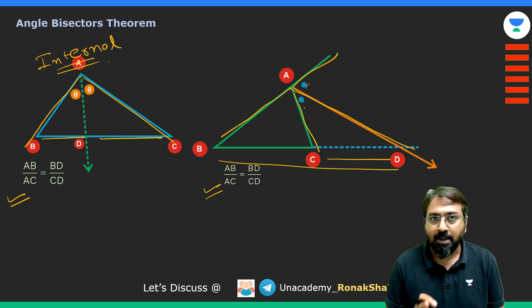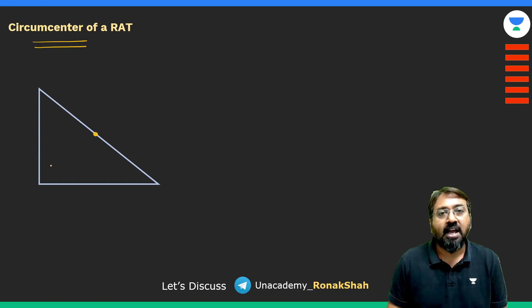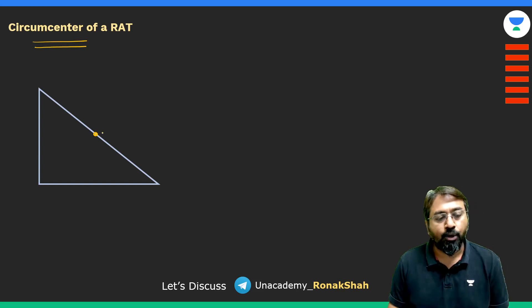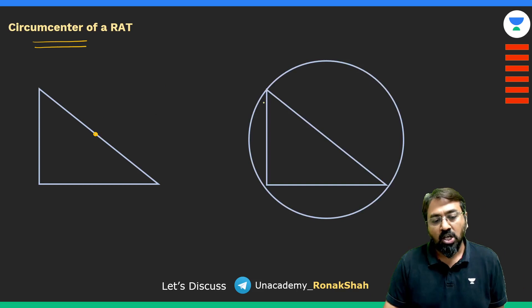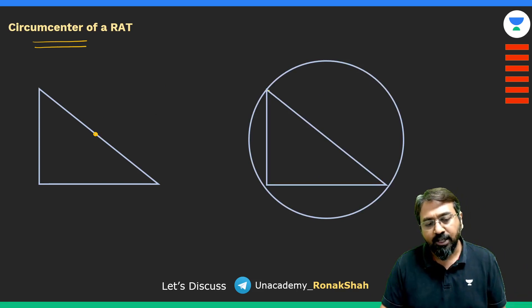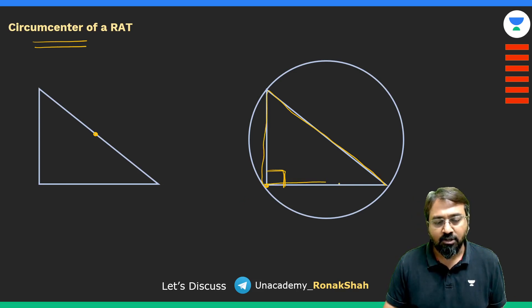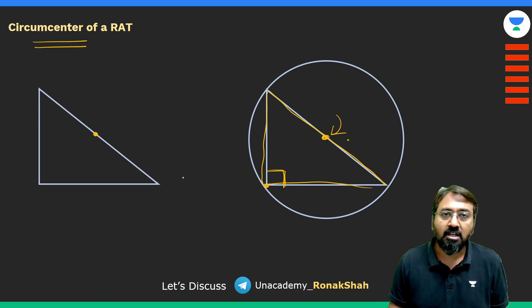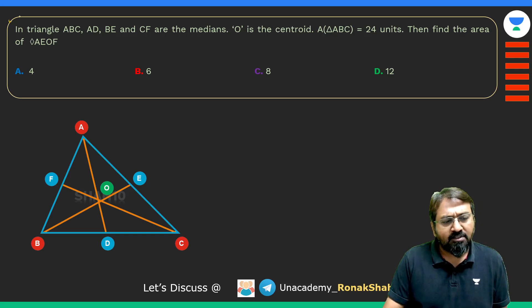One important point: in a right-angle triangle, the circumcenter is always the midpoint of the hypotenuse. Think of it this way — in a circle, if you draw a diameter and connect it to any point on the circumference, it forms a 90° angle. So in a right-angle triangle, the midpoint of the hypotenuse is the center of the circumscribed circle, i.e., the circumcenter.